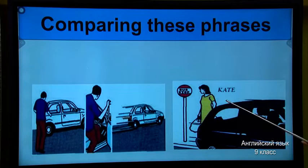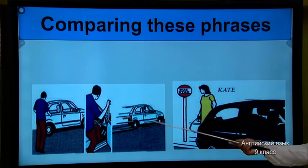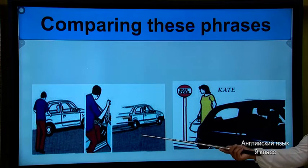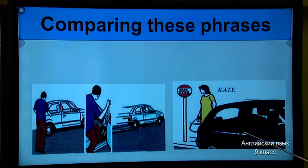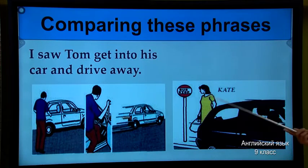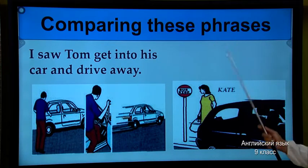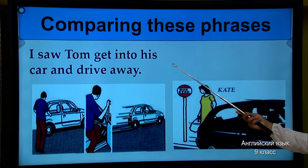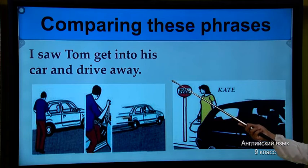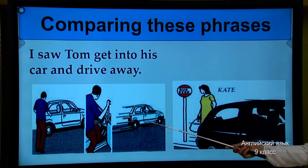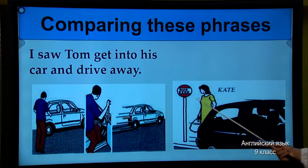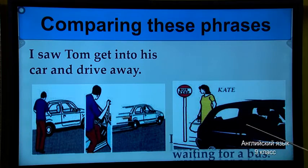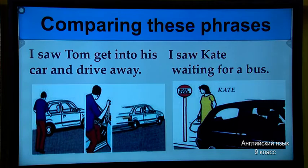Now, here is with pictures. As you can see in the picture, what kind of action can you see? Now, here is the sentence — we'll compare these two phrases. 'I saw Tom get into his car and drive away.' So, first task is completed. Now, 'I saw Kate waiting for a bus.' It means the action is not completed.